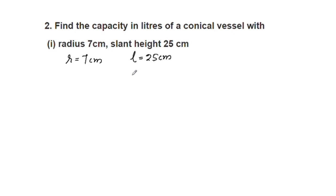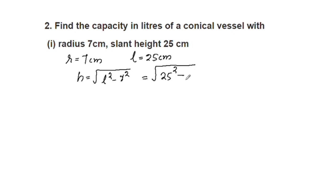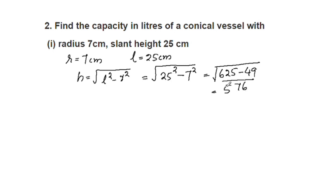We need to find height h. We use the relation h = √(l² − r²). Substituting: l = 25, r = 7. So h = √(25² − 7²) = √(625 − 49) = √576. The square root of 576 is 24. So h = 24 cm.